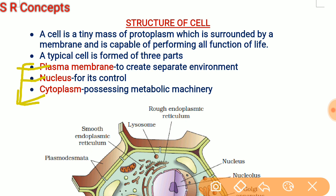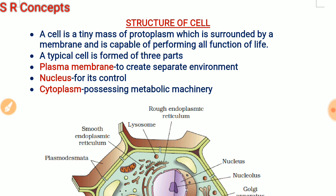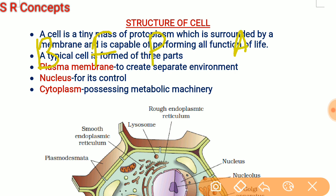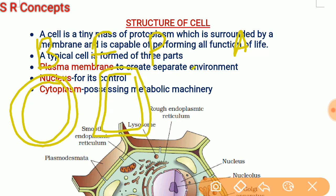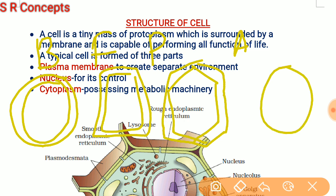If we talk about the different categories of cells on this earth, there are mainly four categories. The first is bacterial cell, the second is fungal cell, the third is plant cell, and the fourth is animal cell. Bacterial cell, fungal cell, and plant cell — all three types of cells have a thick outer covering that is known as cell wall.